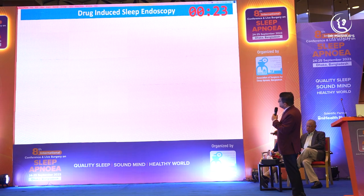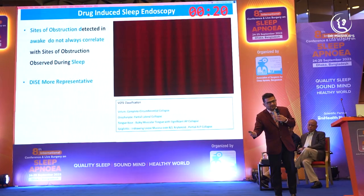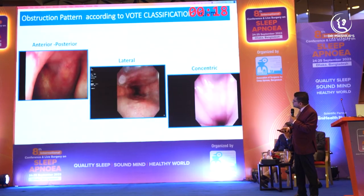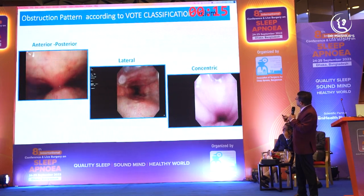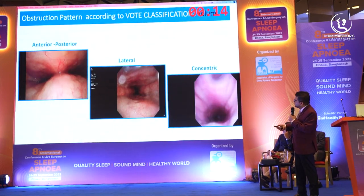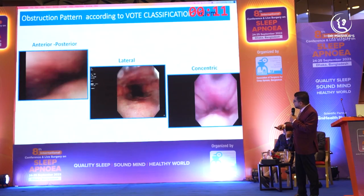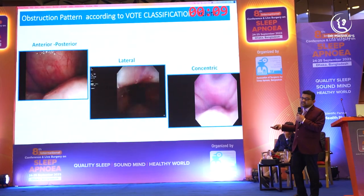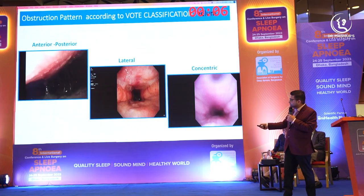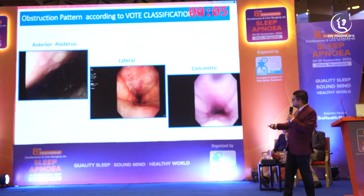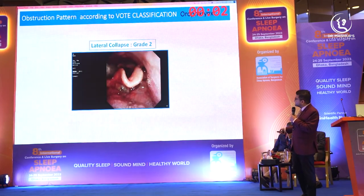Then comes sleep endoscopy — drug-induced sleep endoscopy, which we will discuss later. Sleep endoscopy will tell us a lot of things: if there is a collapse at the level of the velum — anteroposterior collapse, lateral collapse, or circumferential collapse. The surgical approach may be different for each. This patient may need a different surgery, and this patient may need a different surgery.